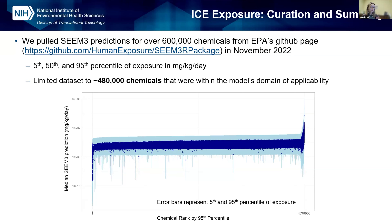One thing I want to highlight is that even though these models are exceptional and the ExpoCast team is top-notch, there's still a lot of uncertainty here. When you look at the 95th percentile compared to the 5th percentile, even for one chemical, there's a lot of range and a lot of uncertainty — there's a magnitude of difference between those estimates.